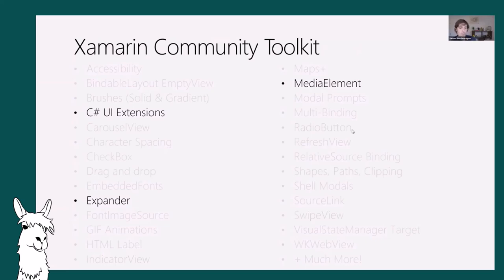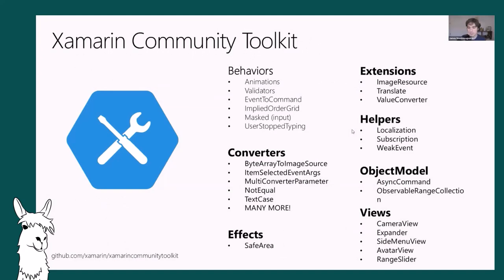The Community Toolkit is much more than just views - it includes behaviors, converters, extensions, helpers, object model helpers like async command and observable range collection, and of course views. Everything is completely open source. Built by the community back to Microsoft, available at github.com/Xamarin/XamarinCommunityToolkit.